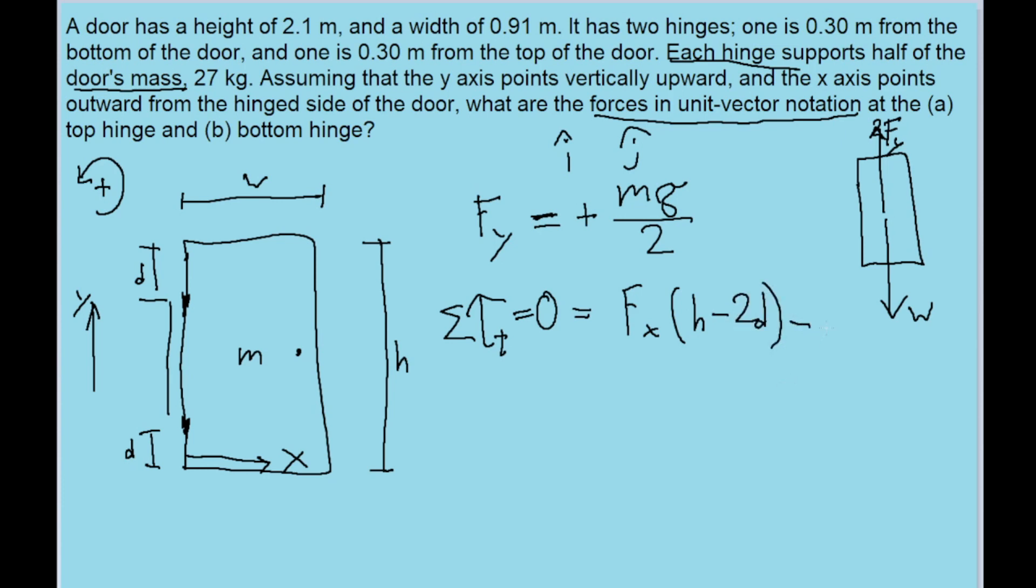As for the negative component of the torque due to the weight, that's going to be the weight of the door, mg, times its lever arm, which is going to be half the width. So mg times w over 2, which we can rewrite as mg times w over 2 is equal to F sub x times h minus 2d.